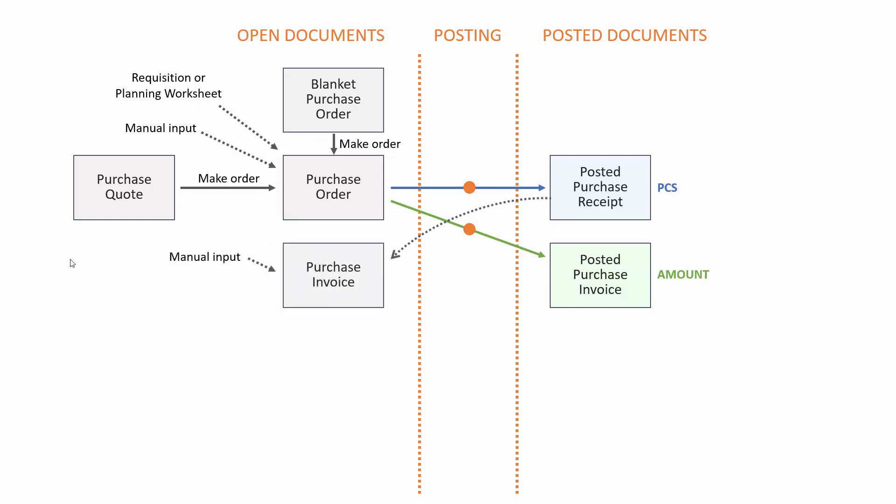A purchase invoice is normally created manually when you buy something. Whereas the purchase order is typically an open list of documents that need to be received — and some of them are received and not invoiced — the purchase invoice list is normally empty because you get the purchase invoice, enter the purchase invoice information and post it. A purchase invoice could be made manually or it could be created from a posted purchase receipt, meaning you could receive on several purchase orders and then grab all the posted receipts into one purchase invoice and post it, which will also update the purchase order document.